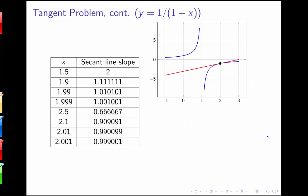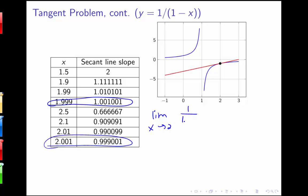If we keep doing this, we see that as x gets closer and closer to 2, our secant line slope is getting closer and closer to 1. This idea of getting closer and closer to something is the idea of a limit. We can say that the limit as x goes to 2 of the quantity 1 over 1 minus x minus negative 1, all over x minus 2, equals 1. And this is the slope of the tangent line through our point p.